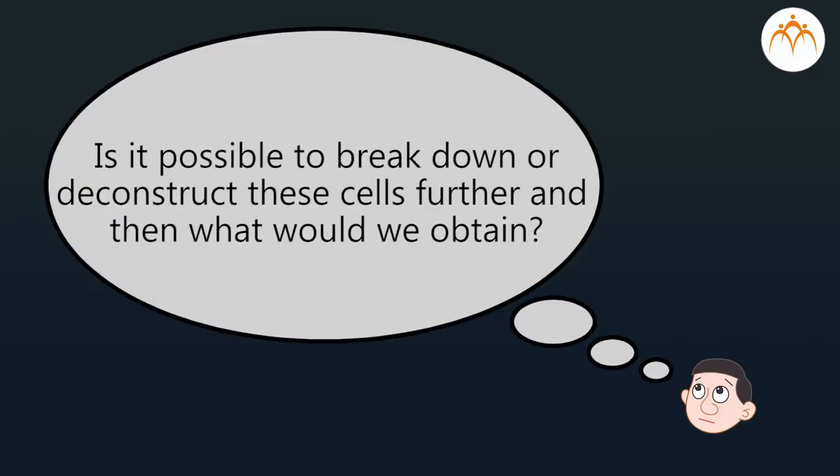Thus, now we can say that entire body is made up of cells. In a different manner, we can say that if we were to take apart all the parts and organs in the body and then start separating all the tissues that make these organs and then start deconstructing all the tissues, we would end up with lots and lots, almost trillions of cells of various kinds. Now, one would question, is it possible to break down or deconstruct these cells further and what would we obtain if we did so?